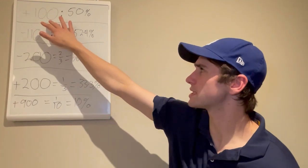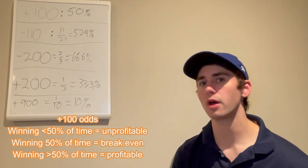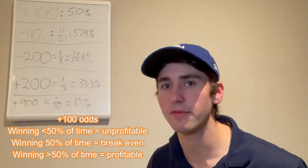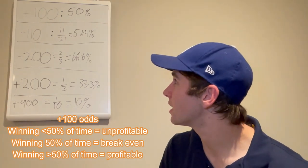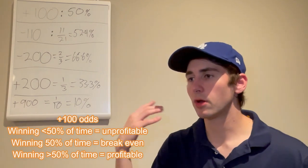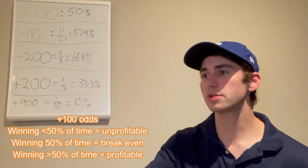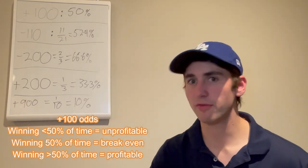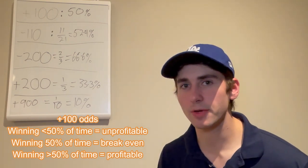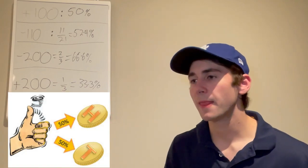We can start with the most simple example: plus 100. If you are betting plus 100 odds, you have to win 50% of the time to break even. You're betting $100, you profit $100 if you win, you lose $100 if you lose. So you just have to win 50% of the time to break even. It's just like flipping a coin.